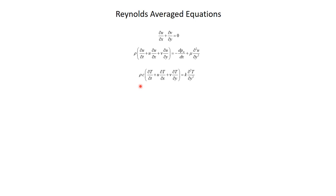Rather than trying to physically capture all the details of the turbulent flow at very small time and length scales, what people do is take these equations and average them. Instead of capturing the actual velocity as a function of x, y, and time, we come up with equations that capture the time-averaged velocity. That averaging process is what's referred to in the Reynolds-averaged equations.